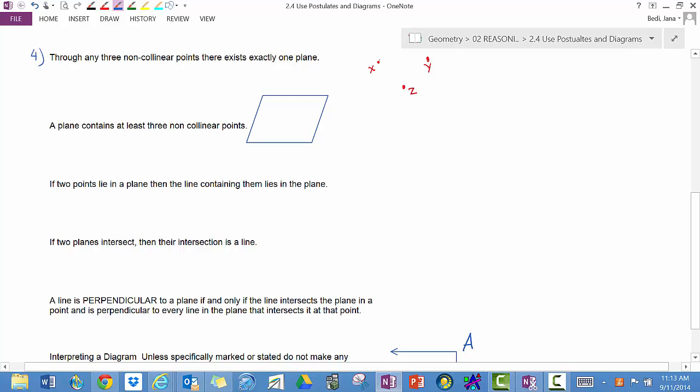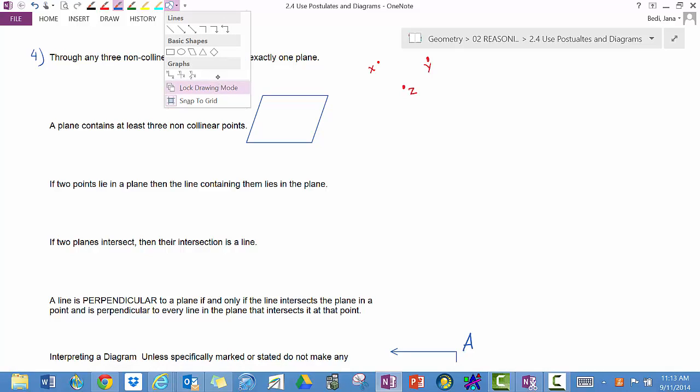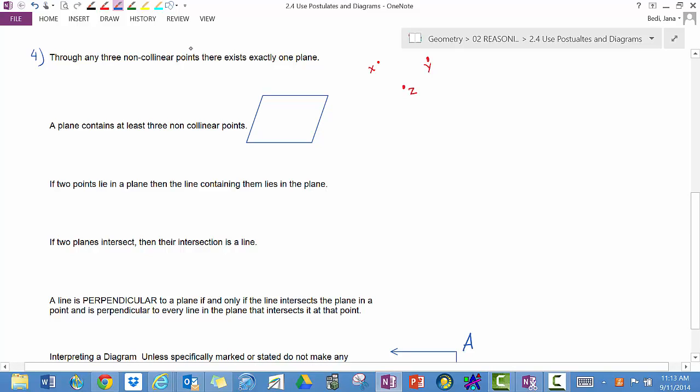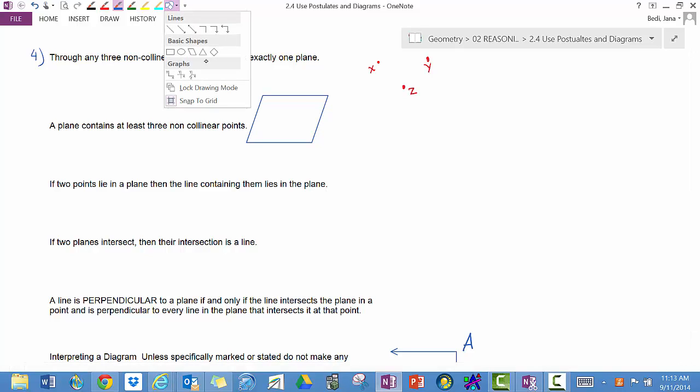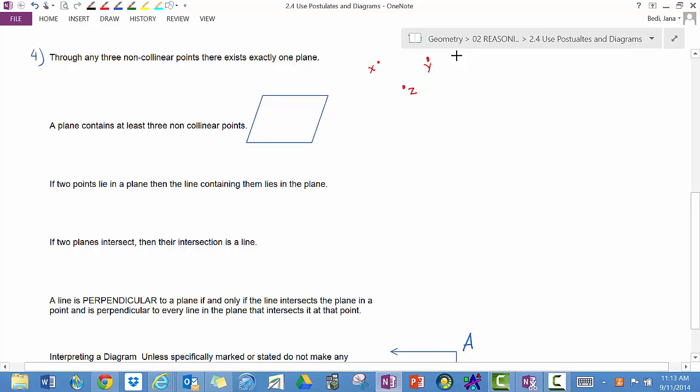If you have three non-collinear points, there exists exactly one plane. So if I have these three non-collinear points. Now, even though when we draw a plane, it has boundaries, in reality, a plane does not have boundaries. We know that three points are non-collinear if they form a triangle.